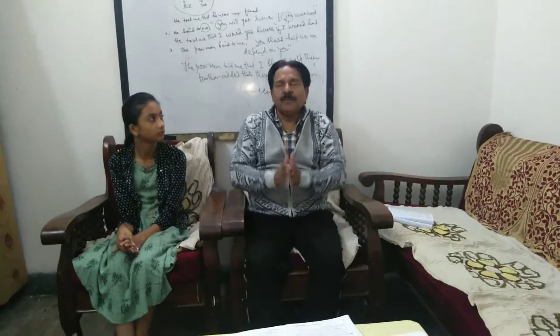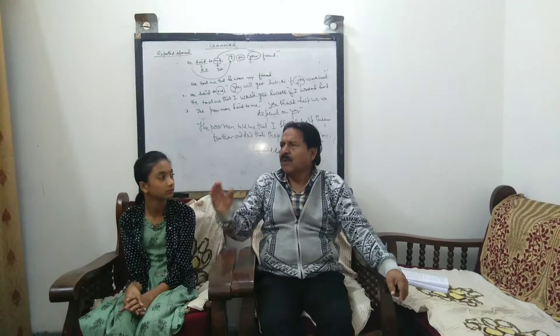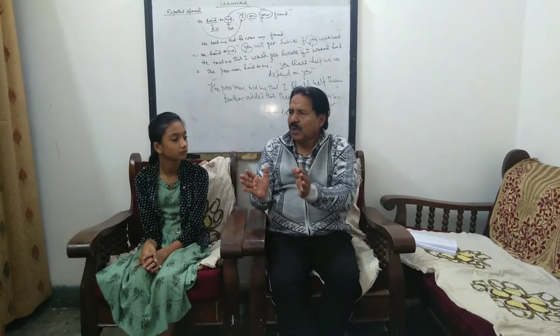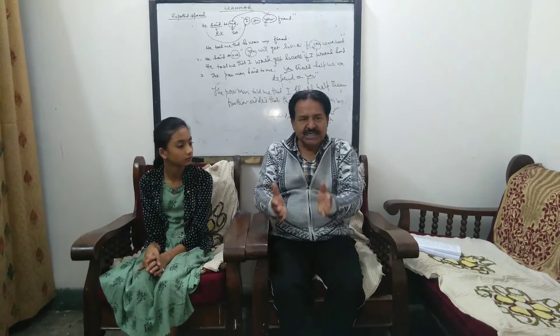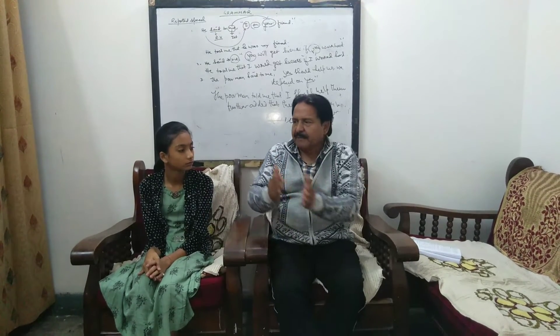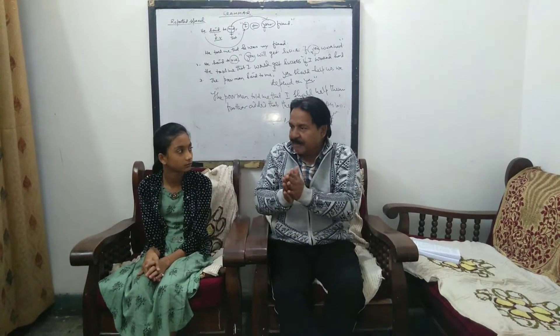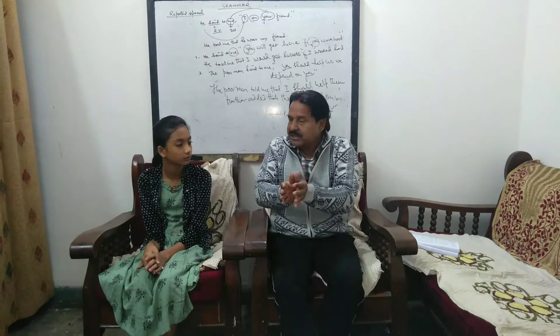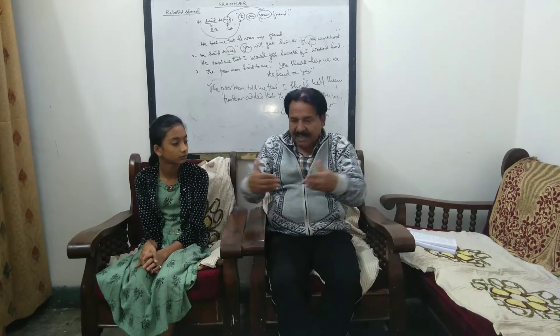Let us summarize the common rules. If two singular subjects are joined by 'and' and they give a single meaning, use singular. For example: 'Rice and curry is my favorite food' and 'Bread and butter is my breakfast,' because these are eaten together as a single item.